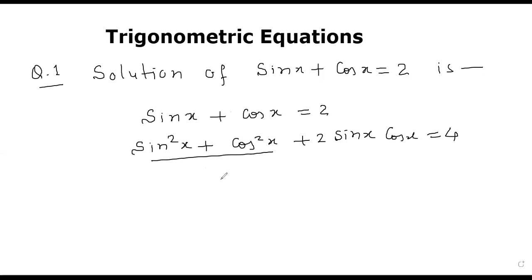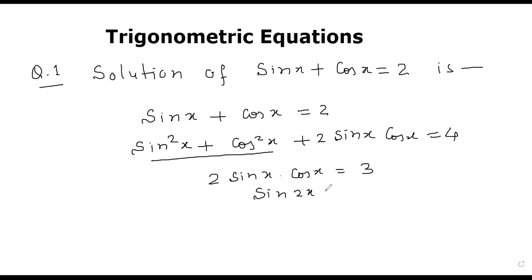This gives 1 + sin x cos x = 3, so sin 2x = 3. But the value of the sine function cannot be greater than 1, so no solution is possible.